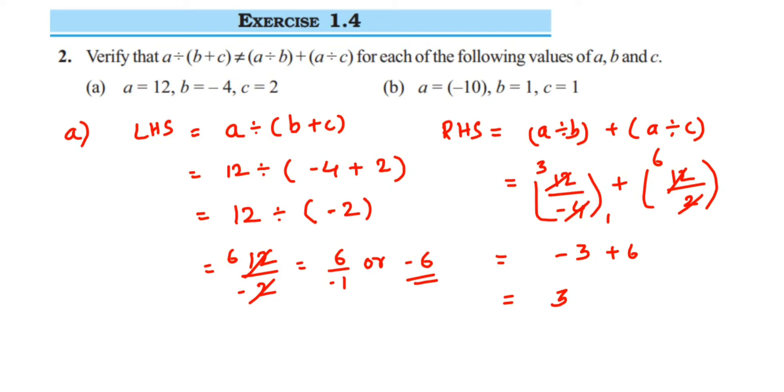Now if you check, we get different answers. Our LHS answer is -6 and our RHS answer is 3, which means LHS is not equal to RHS. So that is what we have verified here - they are not equal. This is the distributive property which is not applicable in case of division of integers. So that's the first question. Same thing we have to do for the second problem.